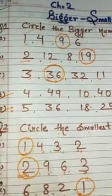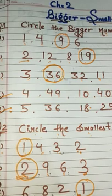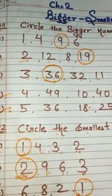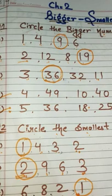Number 2: 2, 12, 8, 19. Which one is bigger? 19. So write 19.